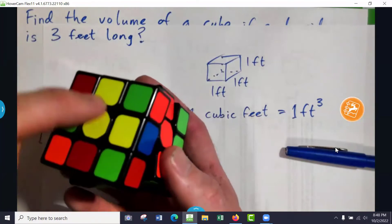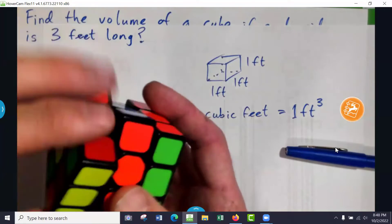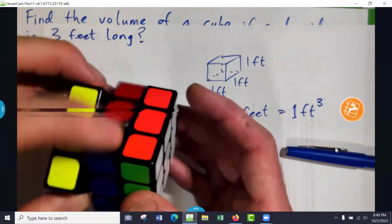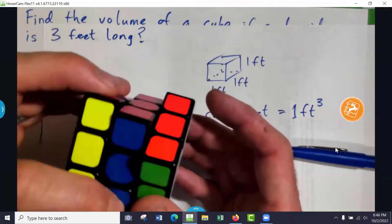And you've got 1, 2, 3, 4, 5, 6, 7, 8, 9 on this layer. That's 18. And then 9 in the middle layer. That's 27.